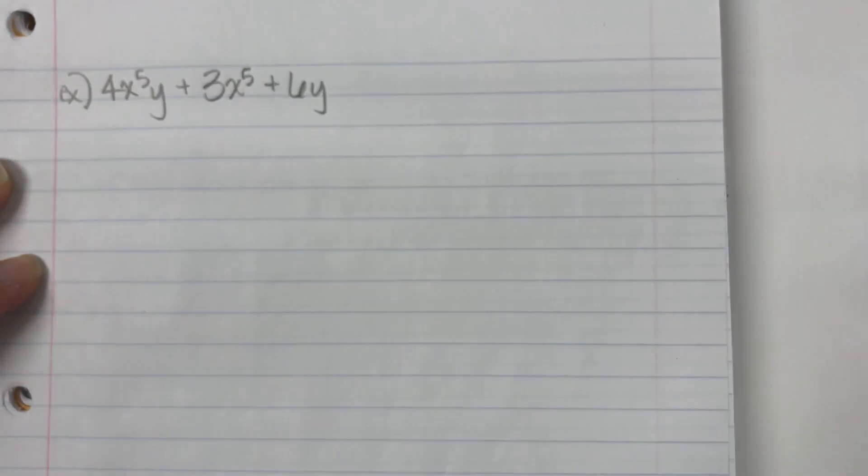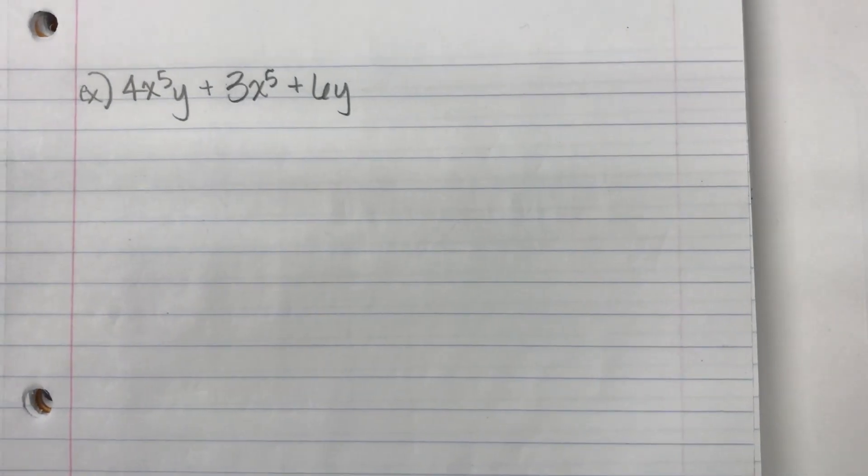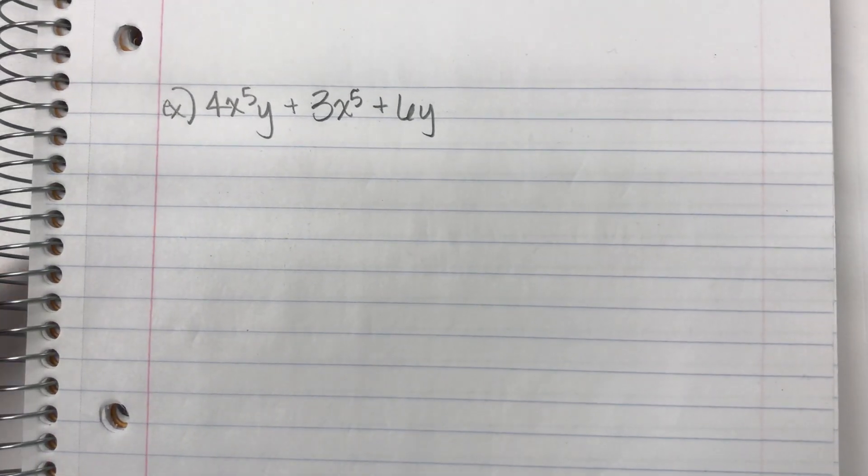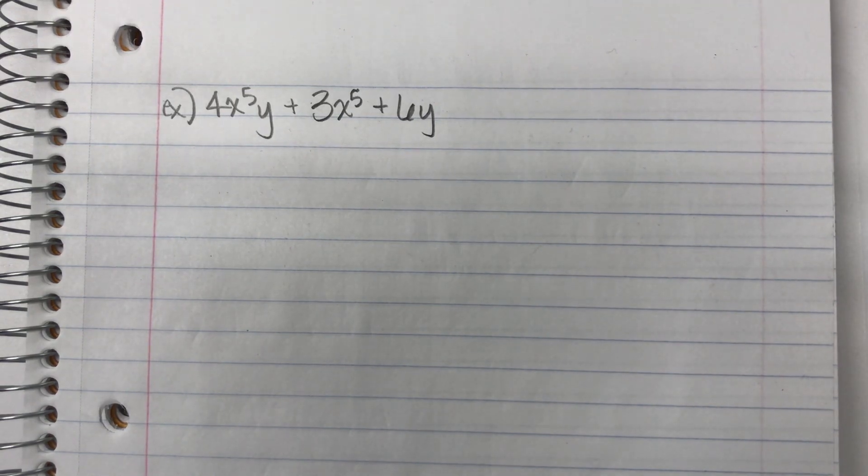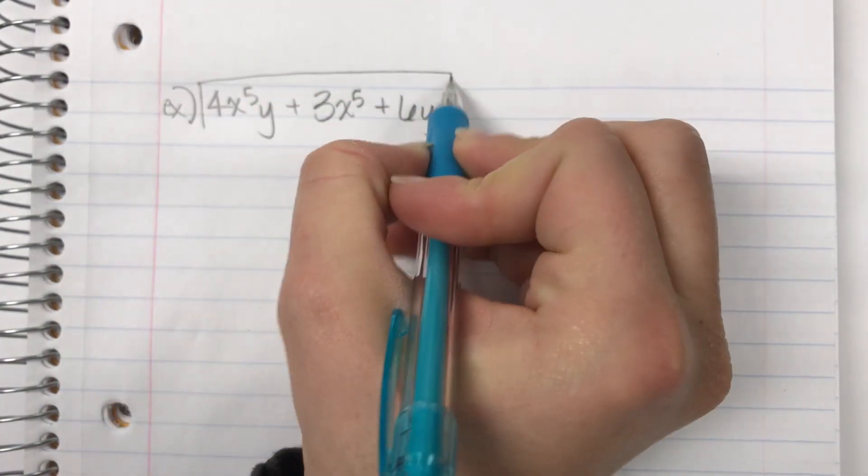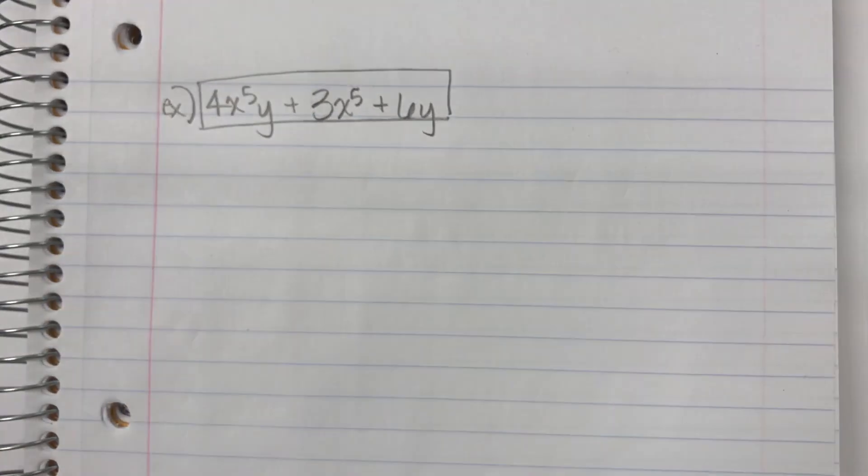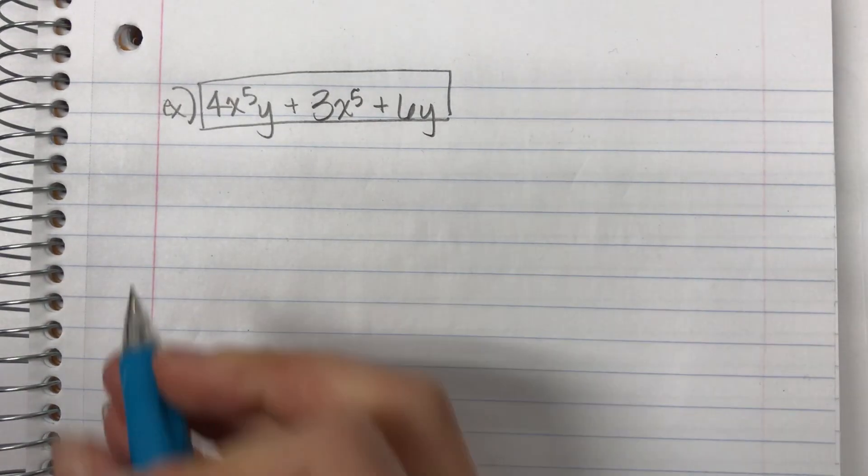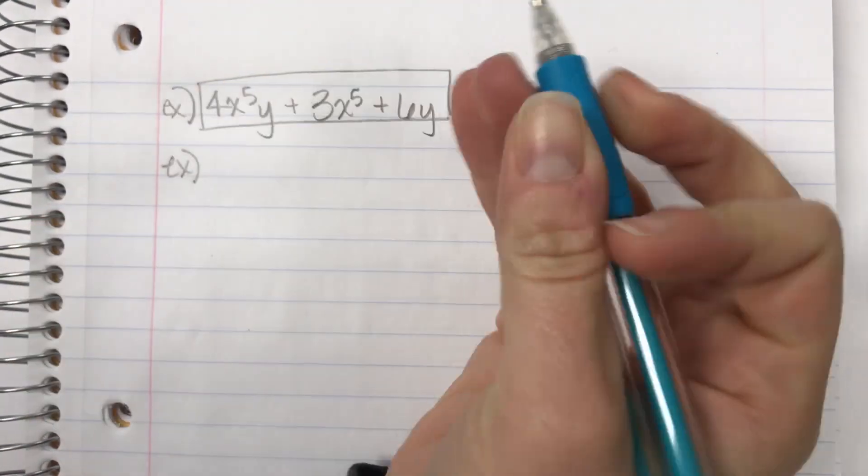plus 3x to the 5th plus 6y. I feel like y'all are going to use these videos to make fun of me in the future because I say stupid things. If I'm going to add this together, total addition problem, nothing matches. There are no like terms. So this problem is finished as it is. For addition, they have to be like terms.